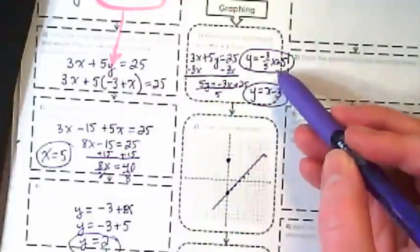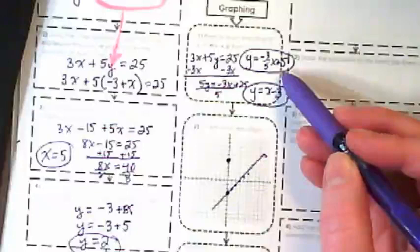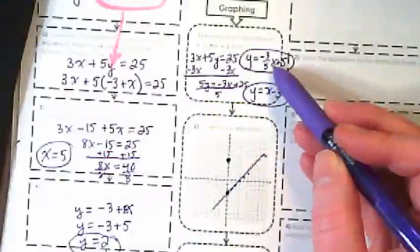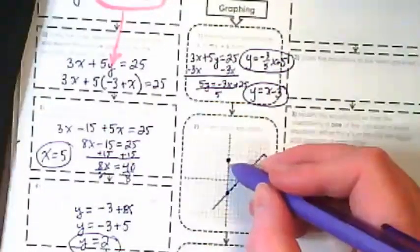The other equation, the y intercept is 5. It's a negative slope of negative 3 over 5.